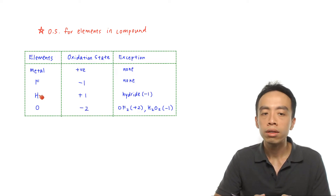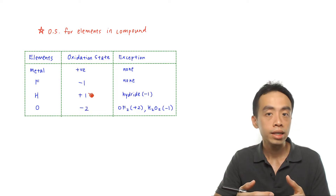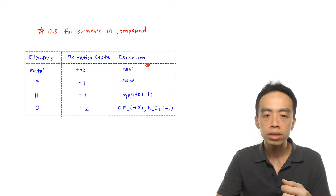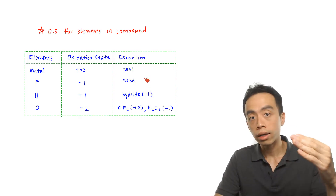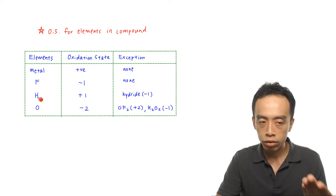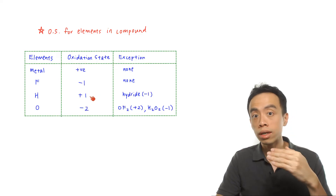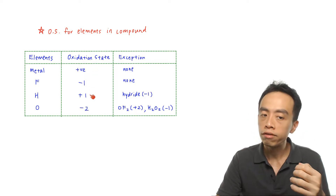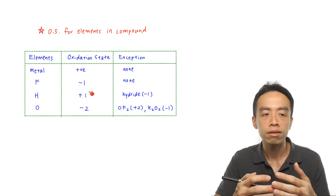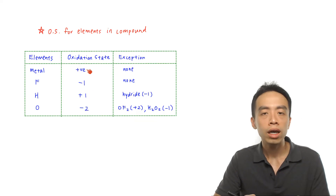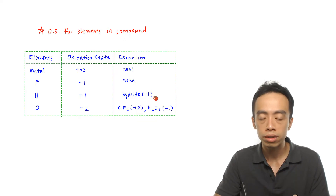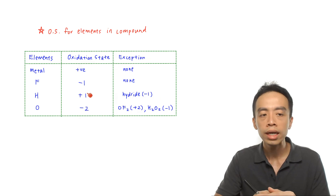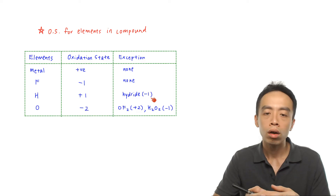For hydrogen, the tendency is an oxidation state of +1, unless it is bonded to a metal. This table is sorted by priority — the higher an element appears in the table, the higher its priority. Metals are listed first and always have a positive oxidation state, so if a compound forms between a metal and hydrogen — which we call a hydride — then hydrogen must take a −1 oxidation state. Under all other circumstances, hydrogen is always +1.